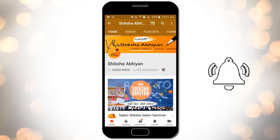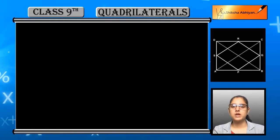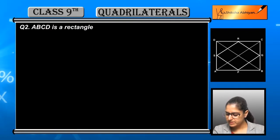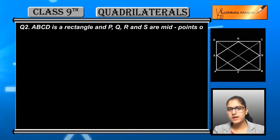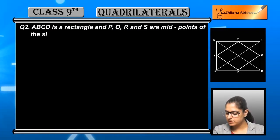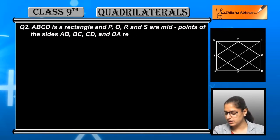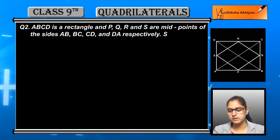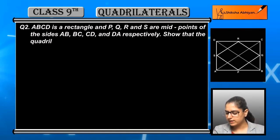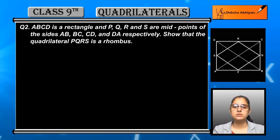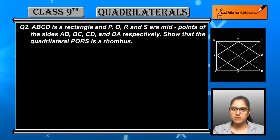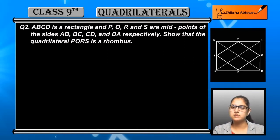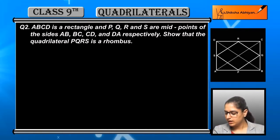Question number two: ABCD is a rectangle and P, Q, R, and S are midpoints of sides AB, BC, CD, and DA respectively. You have to show that quadrilateral PQRS is a rhombus. Given: quadrilateral ABCD is a rectangle and P, Q, R, S are midpoints of the respective sides.